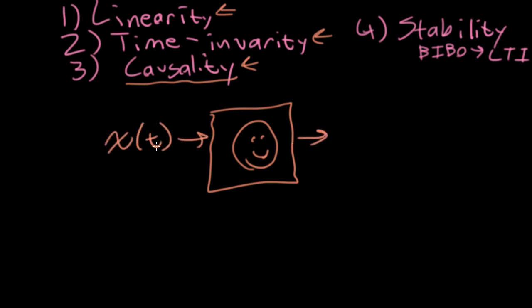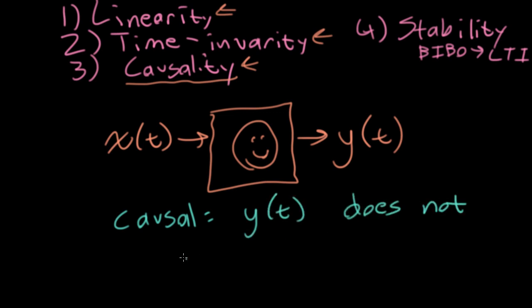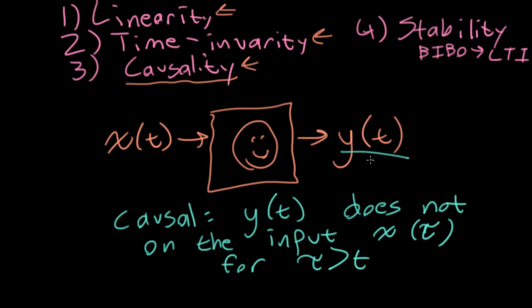Let's call the input x(t) and the output y(t) as we usually have. A system is causal if the output y(t) does not depend on the input x(τ) for τ bigger than t. Basically, to figure out what the output is at y(t), you don't need to look into the future.